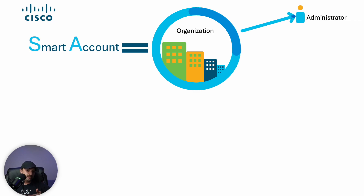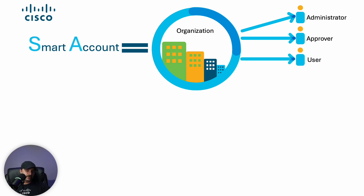Administrator is the super user with full access to all applications and resources. Approver manages user access requests. User has limited privileges to perform specific actions. And viewer can navigate through resources but can't make any changes.